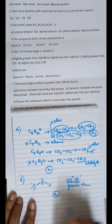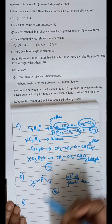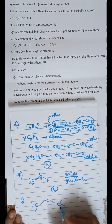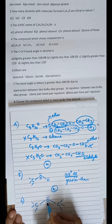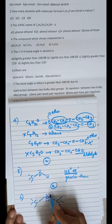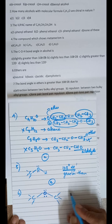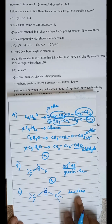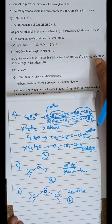Question 6: ethers are neutral, basic, acidic, or amphoteric? In ethers, the oxygen atom has two lone pairs of electrons. Due to these lone pairs, ethers can act as Lewis bases. So ethers are basic in nature, and option B is the correct answer.